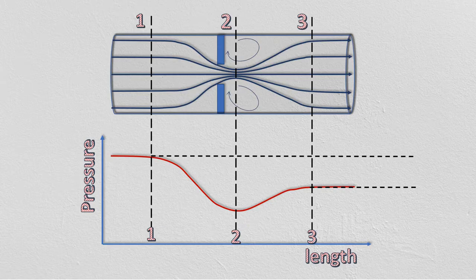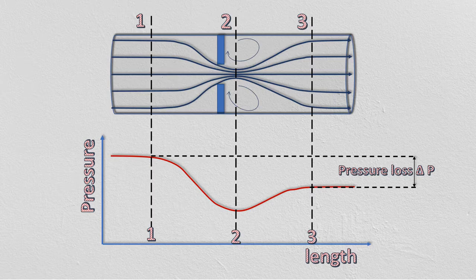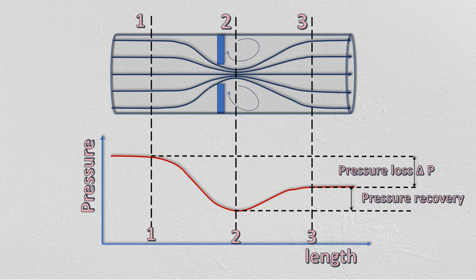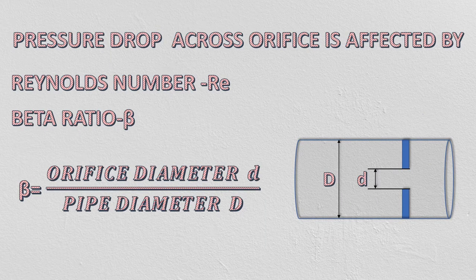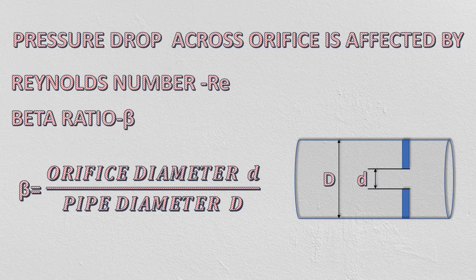The pressure difference between sections 1 and 3 is non-recoverable and known as permanent pressure loss. The pressure difference between section 2 at vena contracta and section 3 is known as pressure recovery. Pressure drop across orifice is mainly affected by Reynolds number and beta ratio.